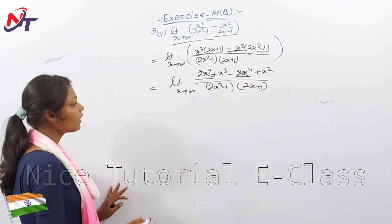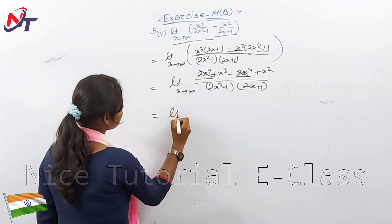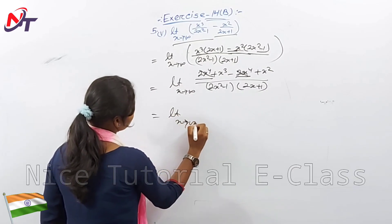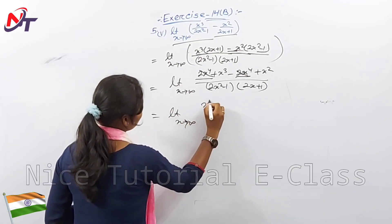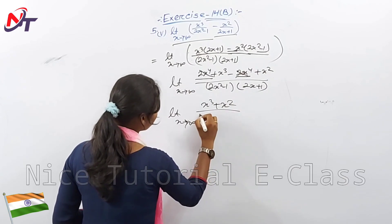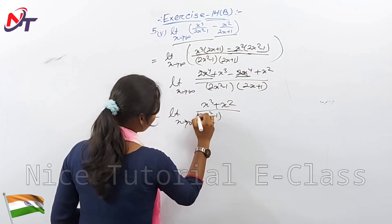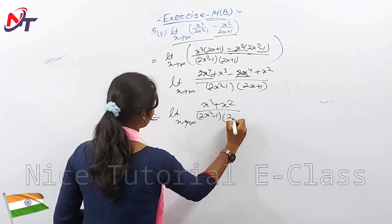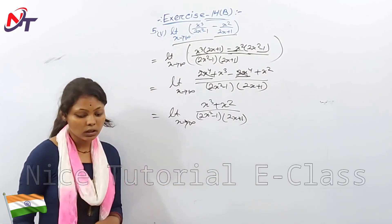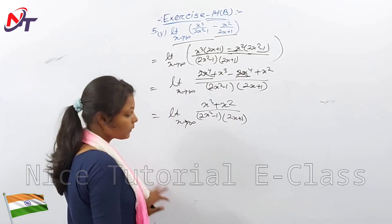Plus and minus cancel out. So after cancellation, we have: limit x tends to infinity of (x³ plus x²) divided by (2x² minus 1) into (2x plus 1).